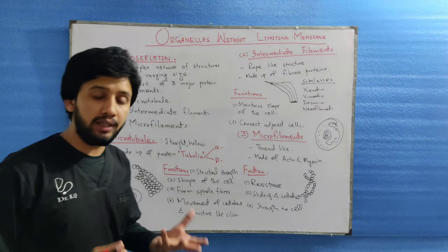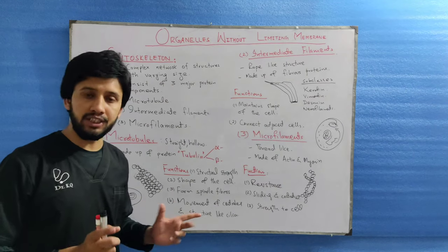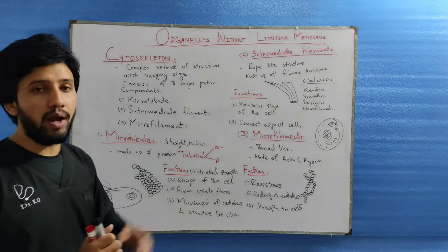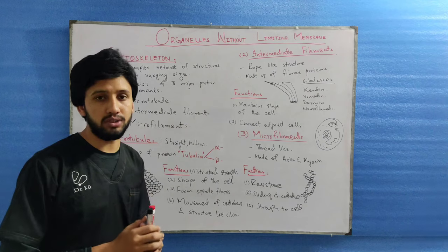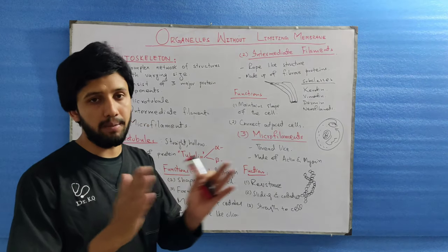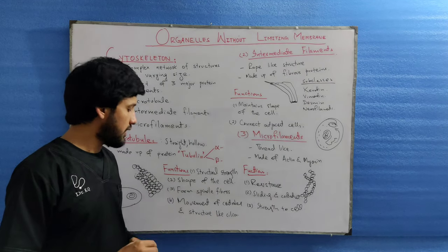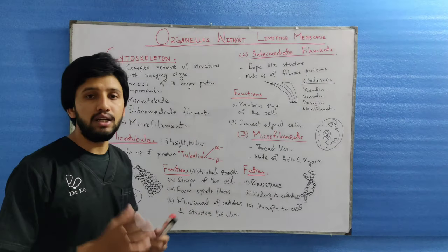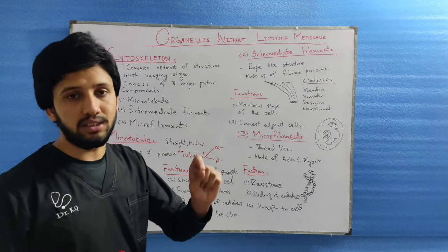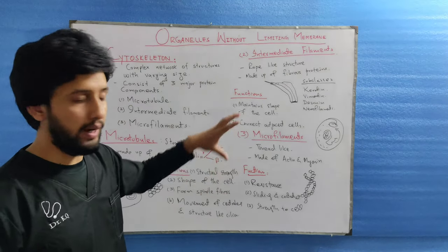The functions microtubules perform include providing structural strength to the cell, determining the shape of the cell, and forming the spindle fibers during mitosis when chromosomes are separating. They also assist in the movement of centrioles and structures like cilia — thread-like structures that help cells in movement.